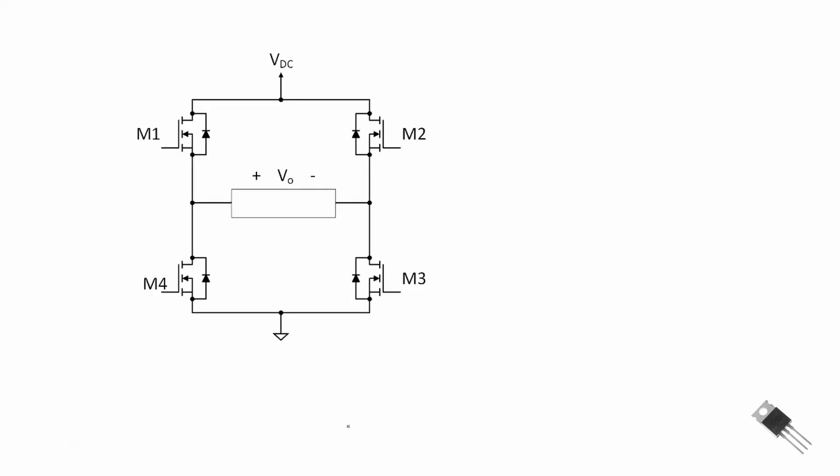Here we show an H-bridge that is connected with a load. We've seen before we can create an AC signal with an H-bridge. For example if we switch M1 and M3 on, the voltage across the load Vout is equal to plus VDC, our DC supply voltage. If we switch M2 and M4 on then our output voltage is equal to minus VDC and we have reversed the polarity of the voltage across our load.